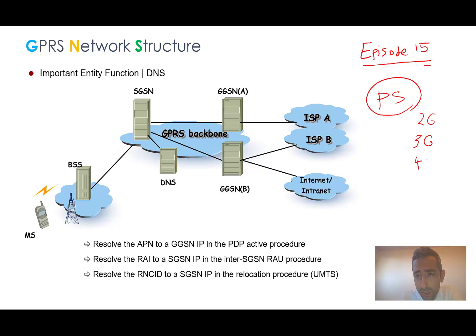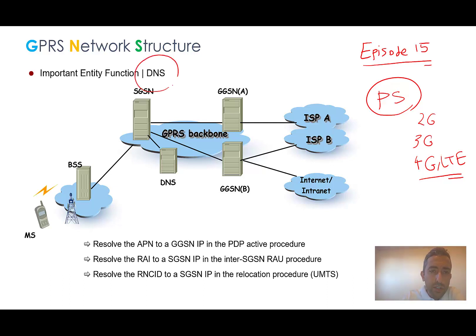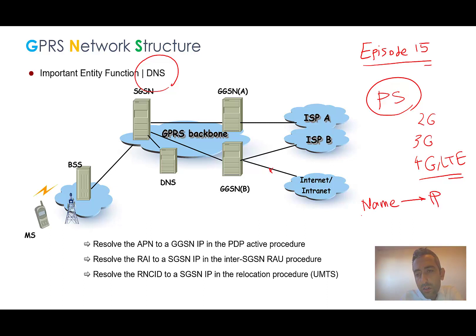In this picture you can see a very important network entity in the PS which is DNS — domain name system. We have two types of DNS in the mobile network. One of them is GI DNS, which functions as you all know: we have a DNS server that resolves the name or domain name to an IP address. This works on layer 7 of the OSI model, or layer 4 or 5 in the TCP/IP model, which is the application layer.